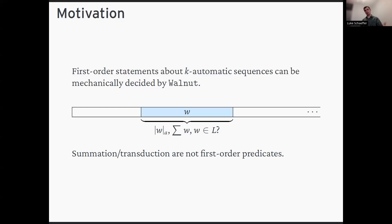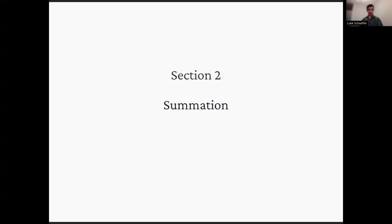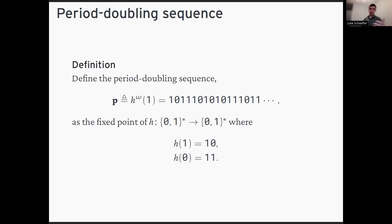I have a collection of older results, and at the end I'll get into some new stuff on the paper folding sequences. To start, I want to talk about summation, and the running example for this talk will be the period-doubling sequence — an infinite binary sequence that is the fixed point of the morphism h, making it pure morphic and 2-automatic.